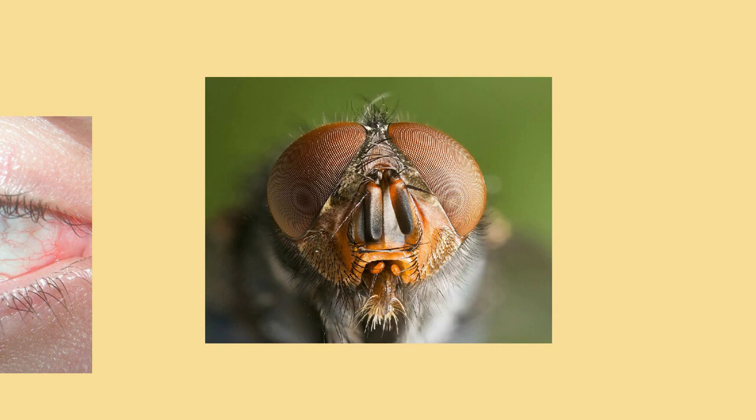A refractive cornea is only useful out of water. In water, there is little difference in refractive index between the vitreous fluid and the surrounding water. Hence creatures that have returned to the water — penguins and seals, for example — lose their highly curved cornea and return to lens-based vision. An alternative solution, borne by some divers, is to have a very strongly focusing cornea.